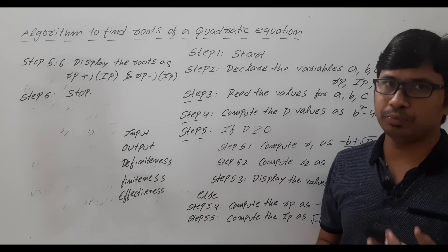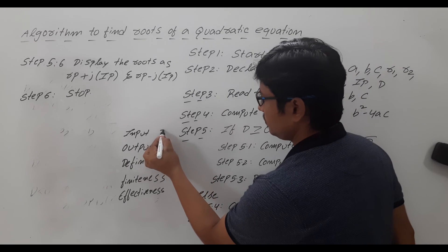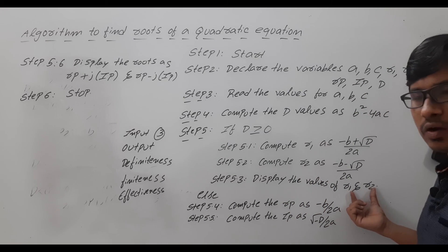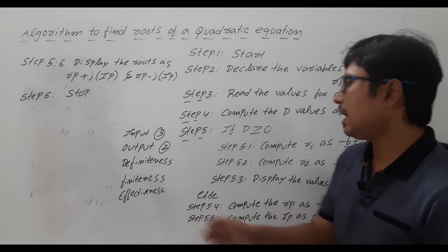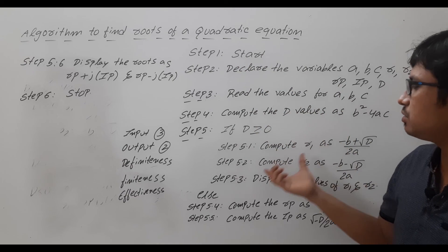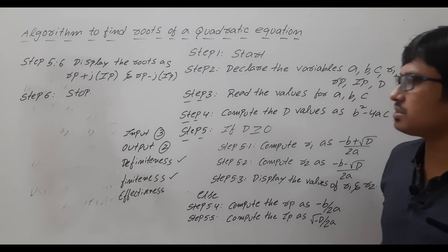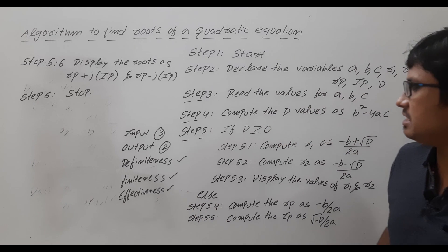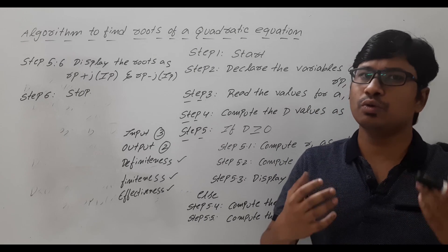Input: there should be zero or more inputs — here we are taking three inputs a, b, c, so that is satisfied. Output: the algorithm gives either two real roots or two imaginary roots as output, so minimum two outputs are produced. Definiteness: every instruction is clear — start, declare, read, compute are all clear. Finiteness: the algorithm completes in a finite number of steps. Effectiveness: each instruction is necessary to complete the task. So it satisfies all five characteristics.